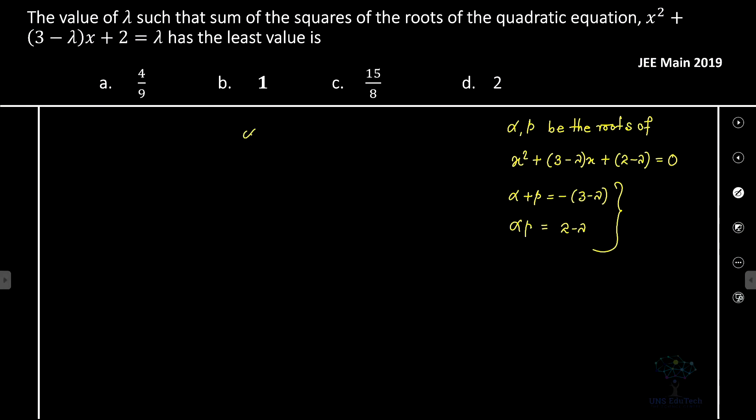So here we need to calculate alpha squared plus beta squared, which implies alpha plus beta whole square minus 2 times alpha into beta, which implies 3 minus lambda whole square minus 2 times 2 minus lambda.